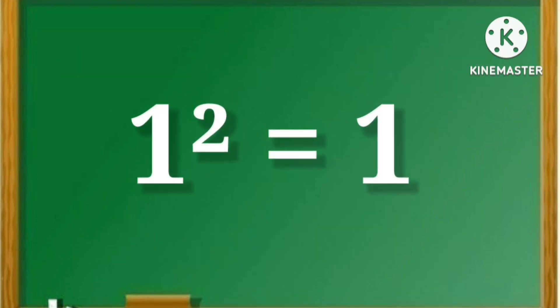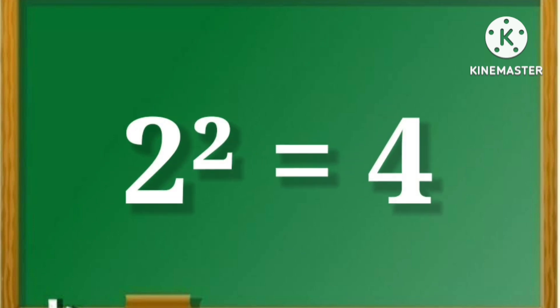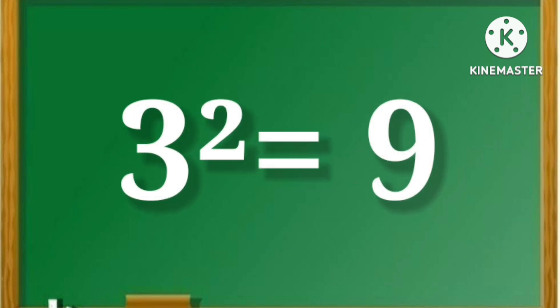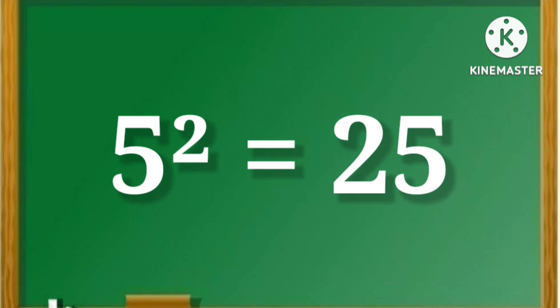1 square is equal to 1. 2 square is equal to 4. 3 square is equal to 9. 4 square is equal to 16. 5 square is equal to 25.